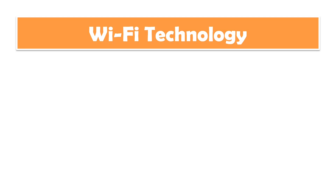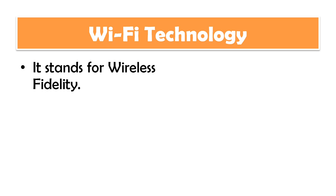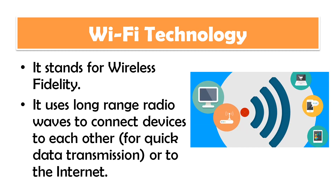The next technology is Wi-Fi. Wi-Fi stands for Wireless Fidelity — fidelity meaning, in general, accuracy or precision. This technology makes use of long-range radio waves to connect devices to each other or to the internet. That means Wi-Fi's coverage range is greater than that of Bluetooth. So if your device is within the Wi-Fi range, you can also make use of the internet.